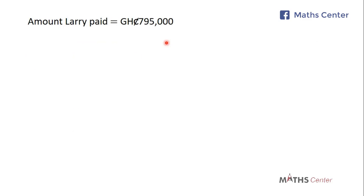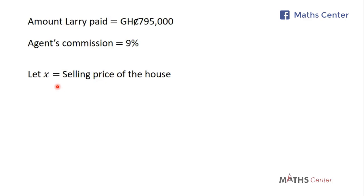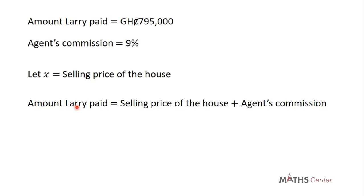We know that the total amount Larry paid was 795,000 Ghana cedis and the agent's commission was 9%. We want to calculate the selling price of the house, so we will let X represent the selling price of the house. Larry pays for two things: the selling price of the house plus the agent's commission. The total amount Larry paid equals the selling price plus the agent's commission.